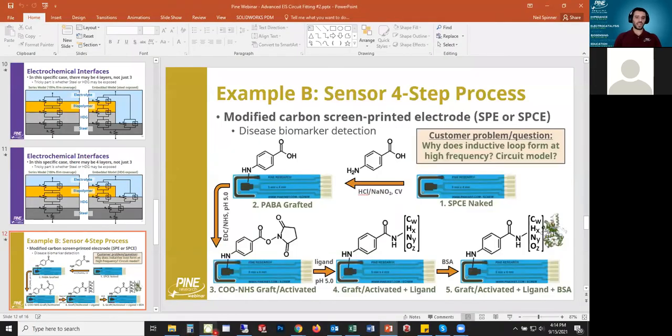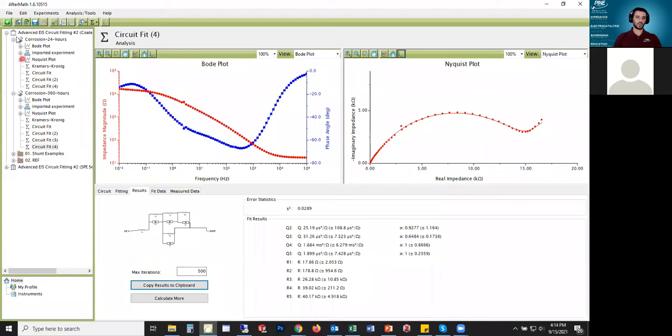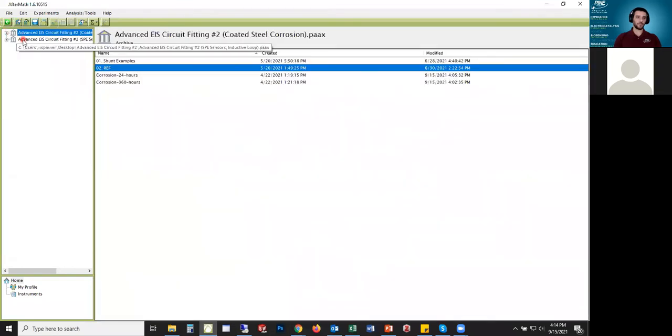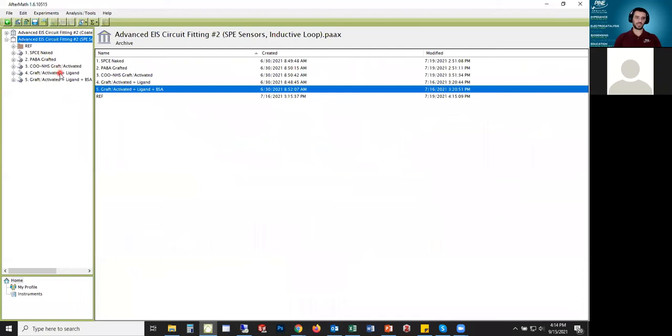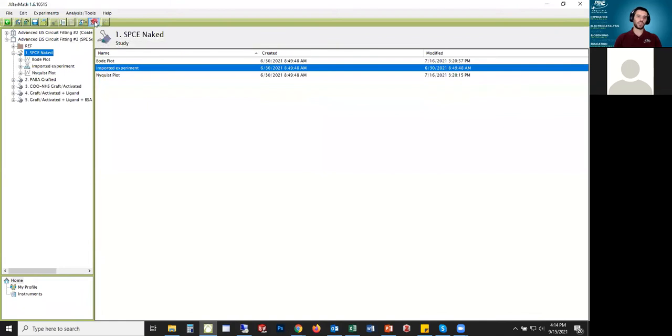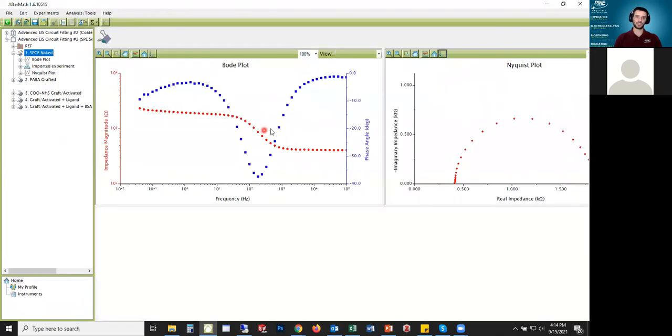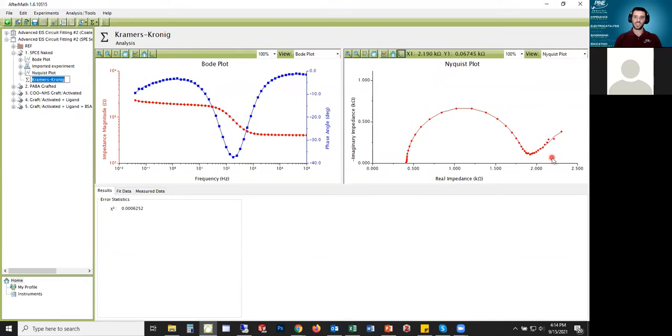I'm going to get into the data here and what I'll do is I'll first show the first three steps because I'll just give away the answer that this high frequency inductive loop showed up in the last two, on four and five. So I will somewhat quickly go through the circuit fits for stages one through three and I'm not going to give too much analysis because I want to try to focus on that high frequency inductive loop that was the interesting feature for this data.